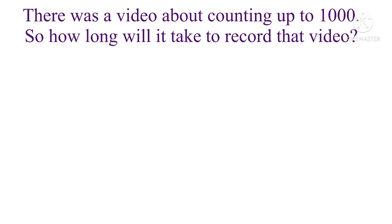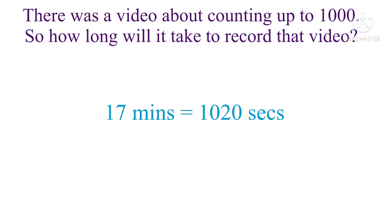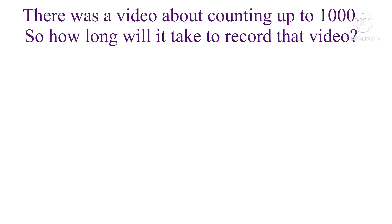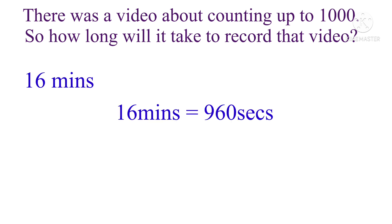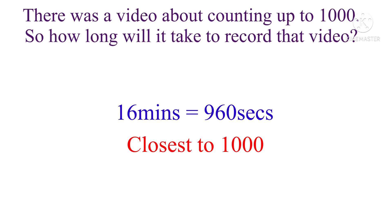What about 17 minutes? That would mean adding another 60 to 960, giving us 1020 — but 1020 is bigger than 1000, so we can't use 17 minutes. Since we can't do 17 minutes, we have to go with 16 minutes. So 16 minutes is 960 seconds, which is the closest we can get to 1000.